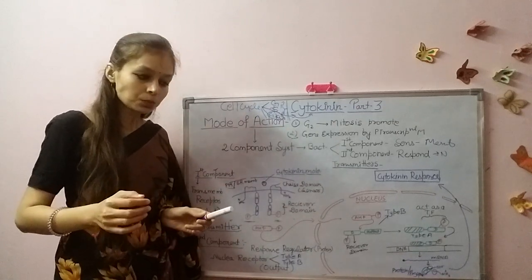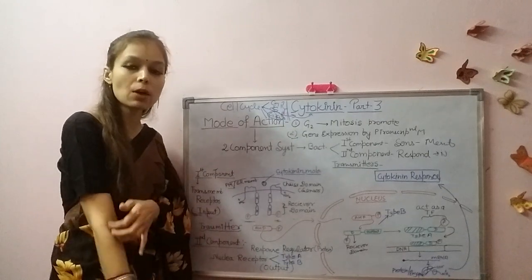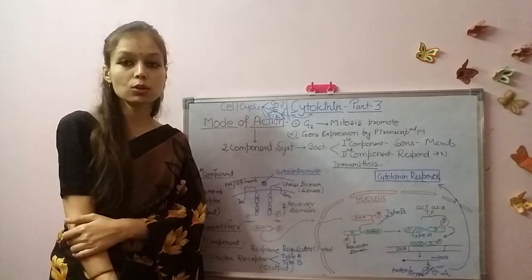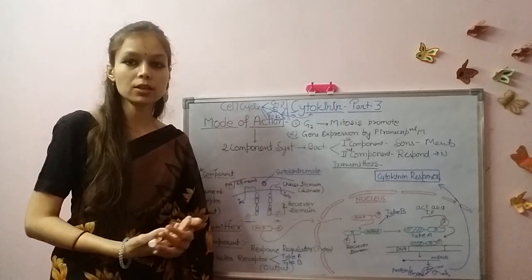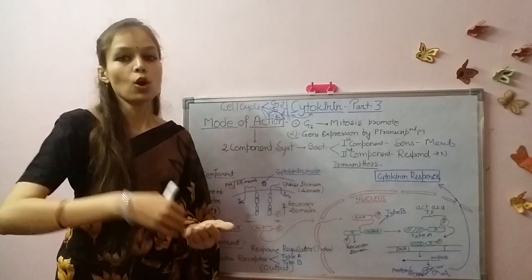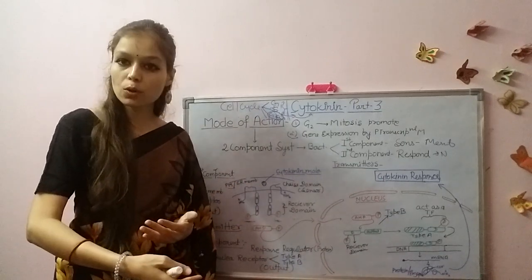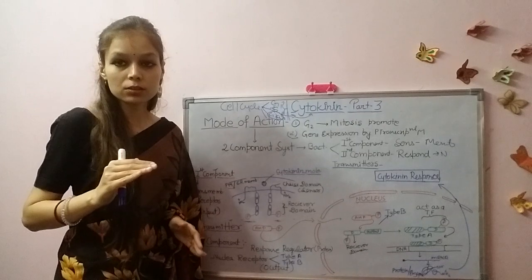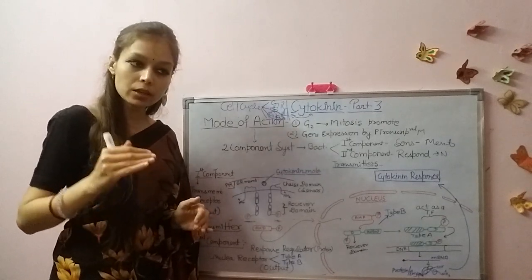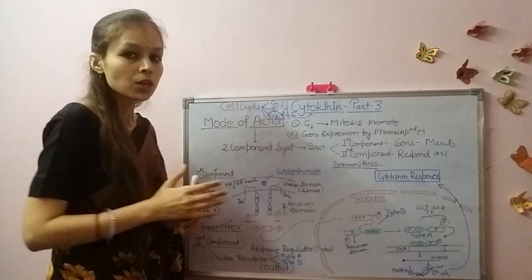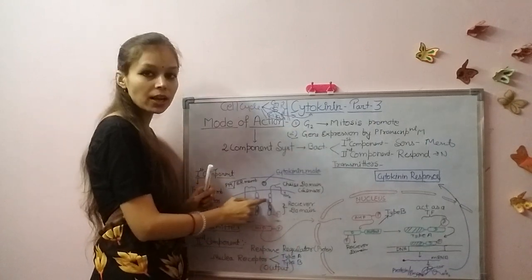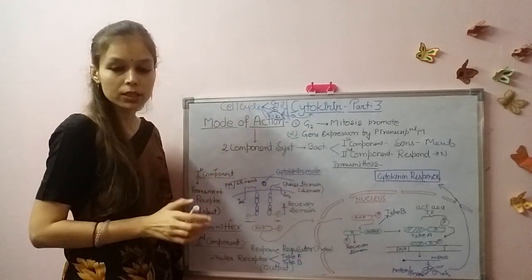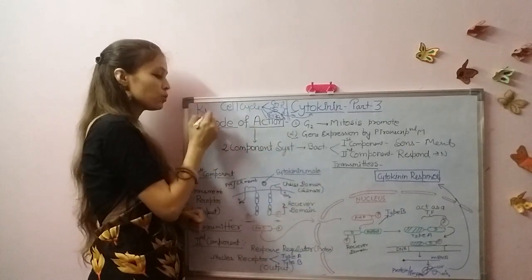This is the two-component system of bacteria. In bacteria growing in any culture with a deficiency of nutrients, how does bacteria sense and respond accordingly? It uses histidine kinase. Histidine is an amino acid, and kinase means it is an enzyme that performs phosphorylation — it phosphorylates a target protein.